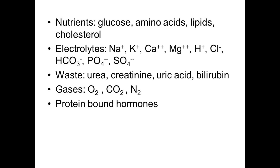Electrolytes in plasma include sodium, potassium, calcium, magnesium, hydrogen, chloride, bicarbonate, phosphate, and sulphate. Waste materials include urea, creatinine, uric acid, and bilirubin. Gases present include oxygen, carbon dioxide, and nitrogen. Other contents include protein-bound hormones.